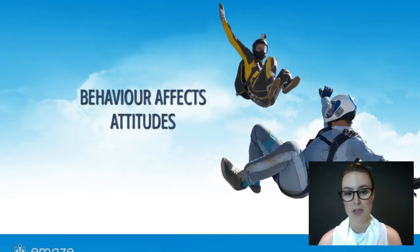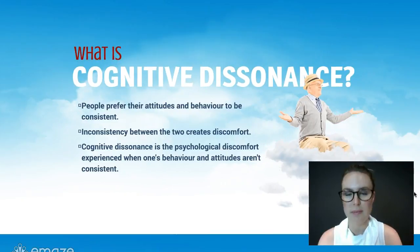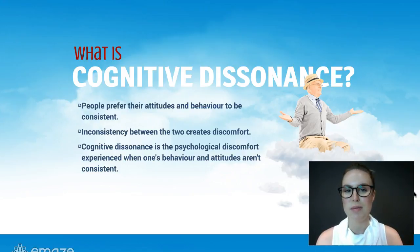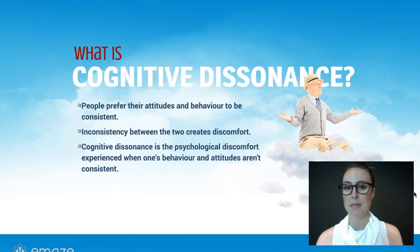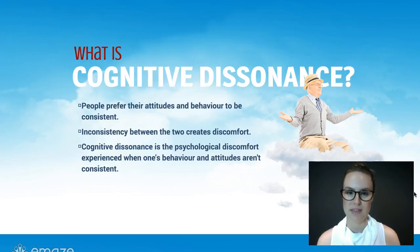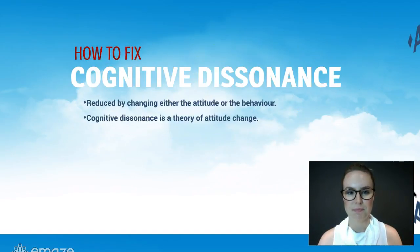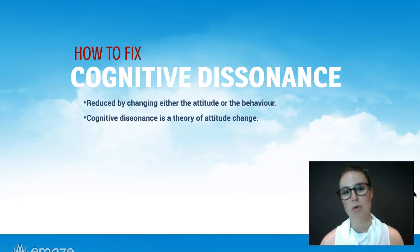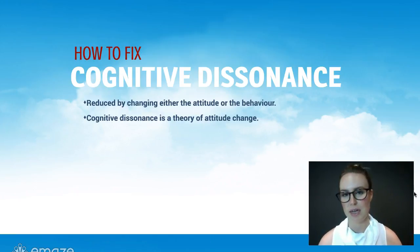Let's look at some of the ways that behaviour affects attitudes — it's really important that you understand these key concepts. The first one is cognitive dissonance. This is a phenomenon where people prefer their attitudes and behaviour to be consistent, and the inconsistency between the two creates a discomfort. That discomfort is called cognitive dissonance — a psychological discomfort when your behaviours and attitudes aren't consistent. You can change this either by changing the attitude or by changing your behaviour. This is a theory of attitude change.